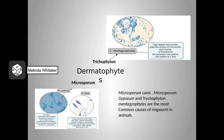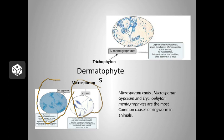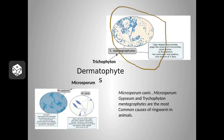Microsporum canis, Microsporum gypsium, and Trichophyton mentagrophytes are the most common causes of ringworm in animals. Here I've included some pictures of the microspores as seen on a microscopic slide. This is M. canis. M. gypsium has a much narrower wall when you look at the spore, and there are more divisions on M. canis than on M. gypsium. Trichophyton, when seen under the microscope, tends to have a lot more microconidia — a lot of little clusters.